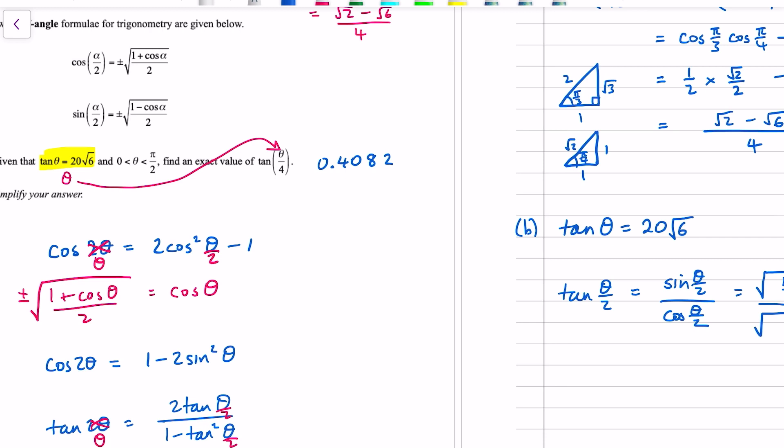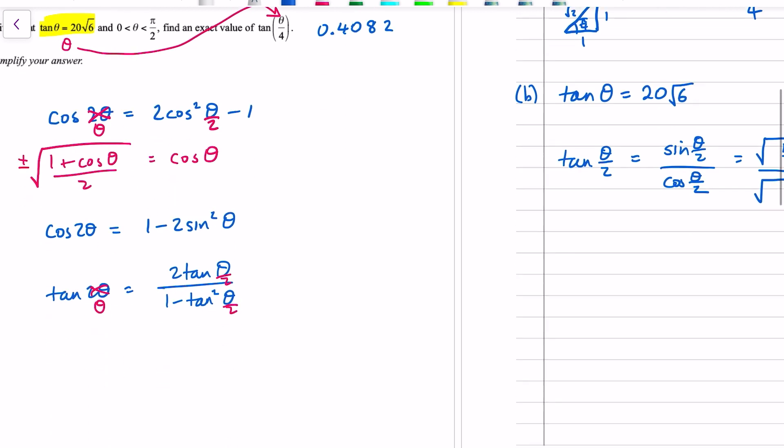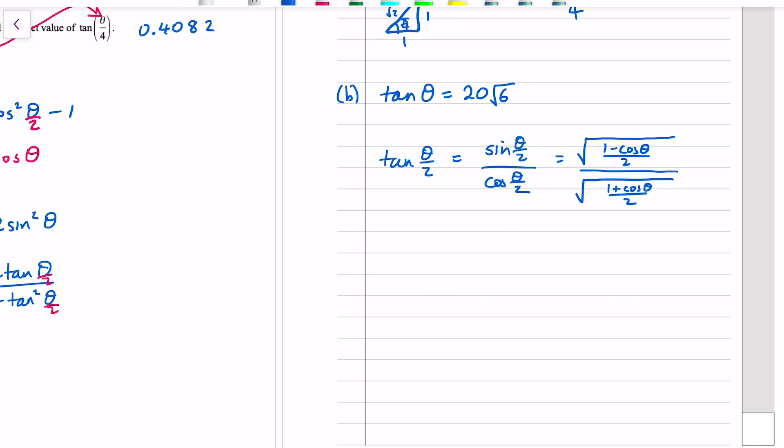Now we don't know what cos(θ) is, but we do know what tan(θ) is. So if you have some information about an angle and a trig ratio, we can always turn 20√6 to 20√6/1 and then we can do that as opposite over adjacent. And then to find the hypotenuse here we use Pythagoras: 1 + 400 times 6 = 2401, which seems a bit weird, but when we square root that it comes out to be 49. So our hypotenuse there is 49, which means cosine of theta is 1 over 49.